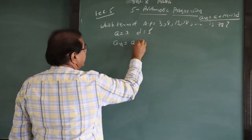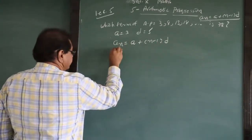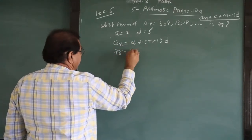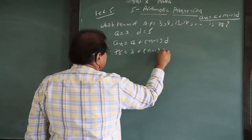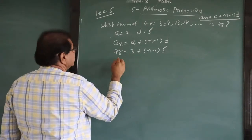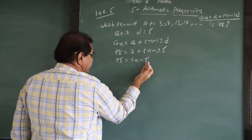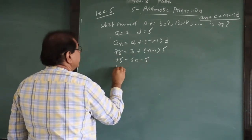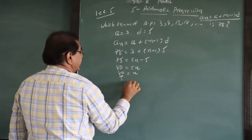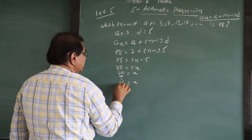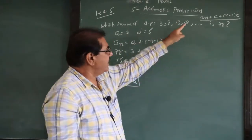Now I apply the formula: An = A + (N-1) × D. The nth term is 78, so 78 = 3 + (N-1) × 5. Therefore, 78 - 3 = 75 = 5N - 5. Moving -5 to the other side: 75 + 5 = 80 = 5N. So N = 80 ÷ 5 = 16. The 16th term of this AP is 78.